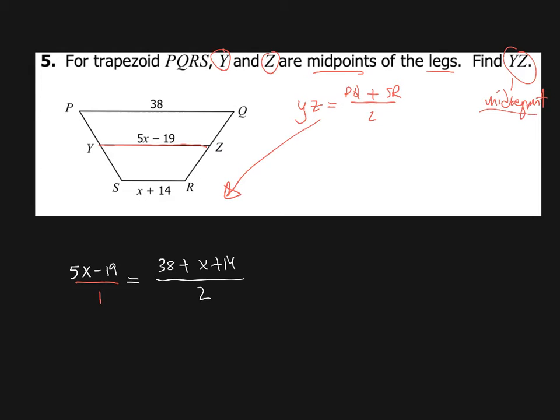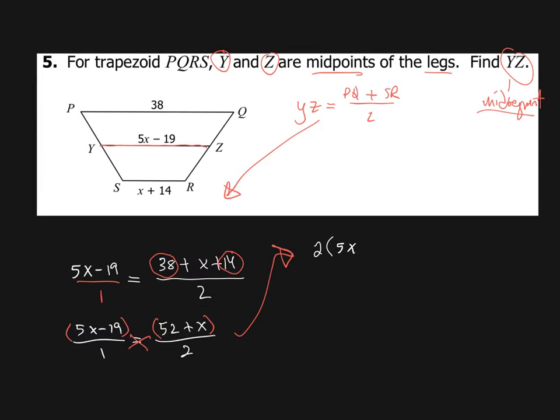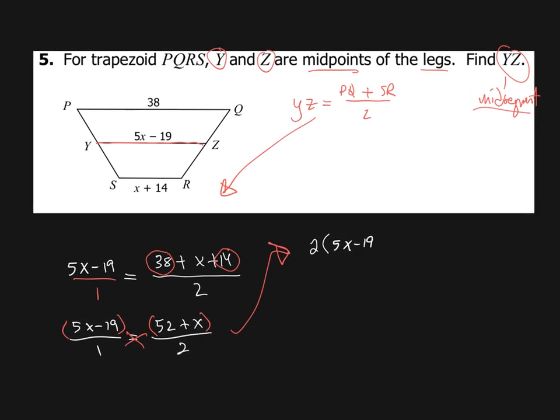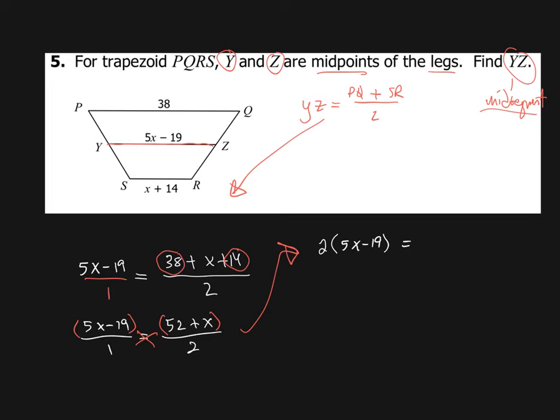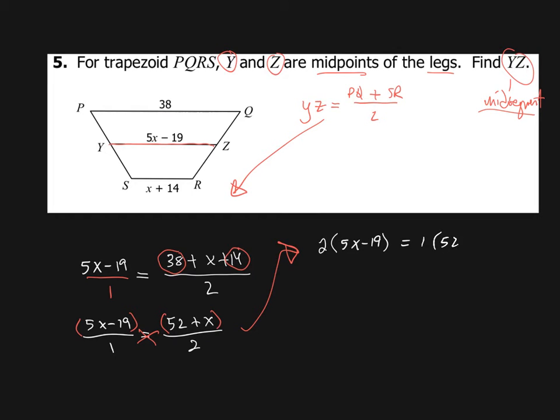Now, I suppose we'll put this over one, and we'll set this up and solve as a proportion. Now, one of the things we can do is combine like terms to make our lives a little bit easier. So before we cross multiply, we'll just say 5X minus 19 over 1 is equal to, and we're just going to add 38 plus 14 to give us 52 plus X or X plus 52. And now we got ourselves a nice little proportion we can solve. So there's implied parentheses around these expressions. So we're going to say that 2 times 5X minus 19,